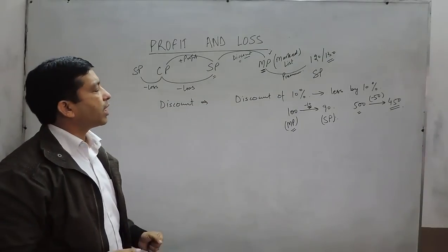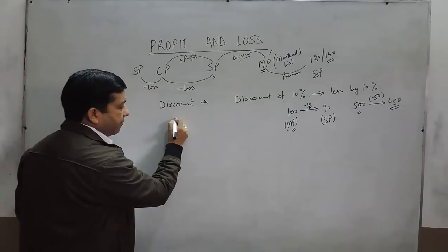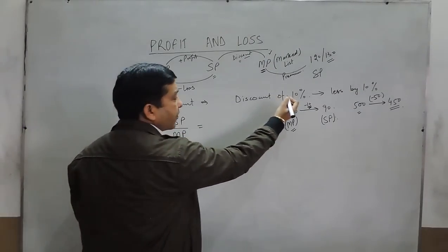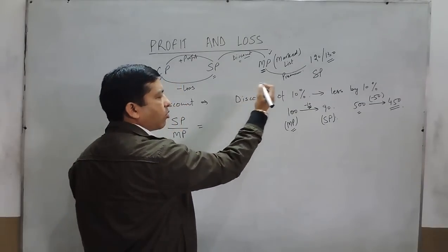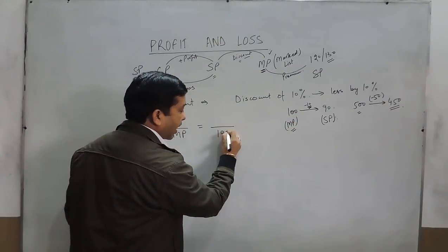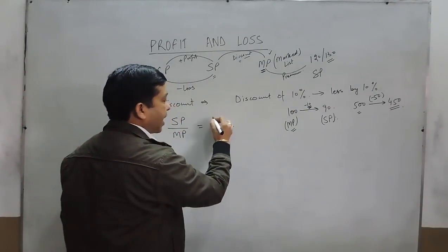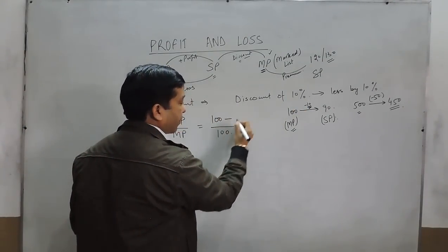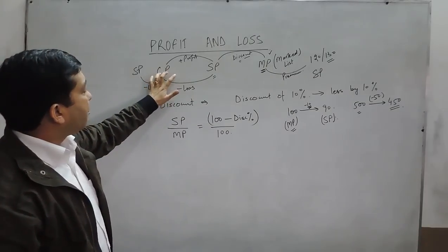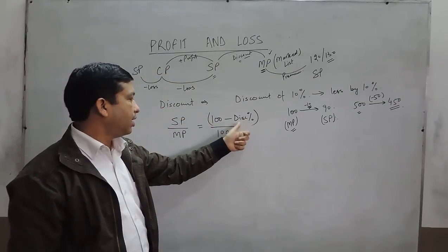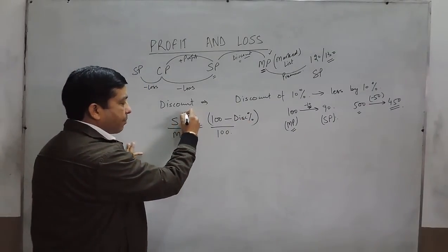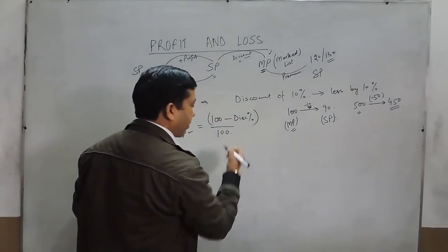Now when we talk about the formula — just as we discussed the ratio of selling price to cost price — the same way we can discuss the ratio of selling price to mark price. We can say selling price upon mark price equals 100 minus discount percent upon 100. So the discount of 10%, 20%, or 50% — whatever it is — is always on 100. The mark price minus whatever discount percent is subtracted gives the selling price. As with loss: SP/CP = (100 − loss%) / 100, here it is SP/MP = (100 − discount%) / 100.